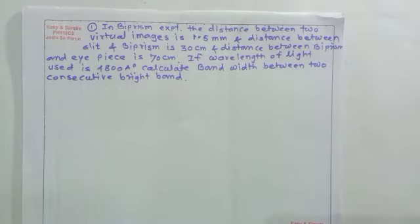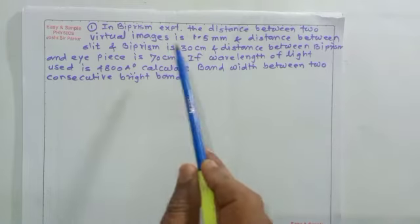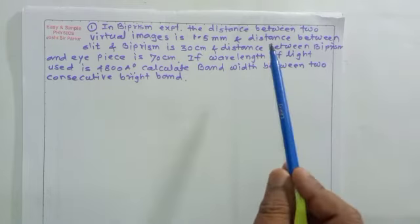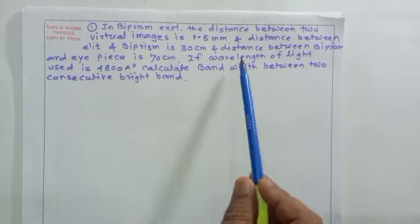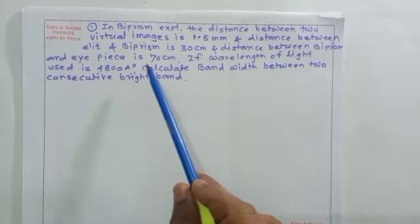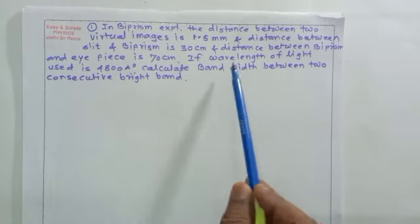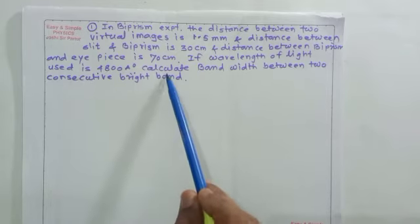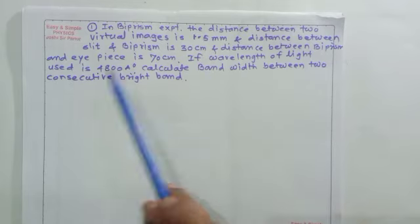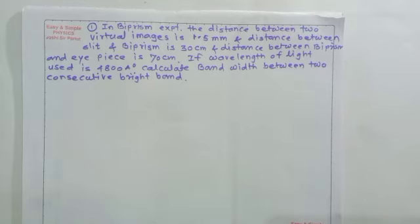In the first example of the biprism experiment, the distance between two virtual images is 1.5 mm, and the distance between the slit and biprism is 30 cm. The distance between biprism and eyepiece is 70 cm. If the wavelength of light used is 4800 angstrom units, calculate the bandwidth between two consecutive bright bands. If such a question is asked, then we have to find the given data.